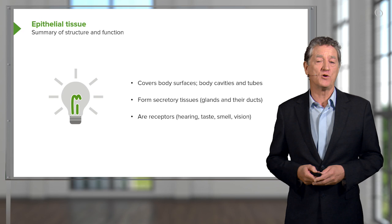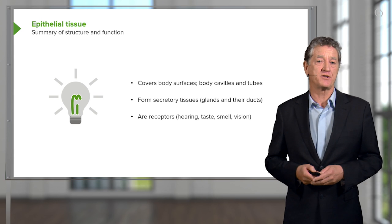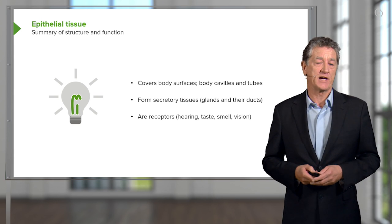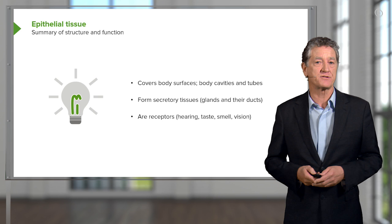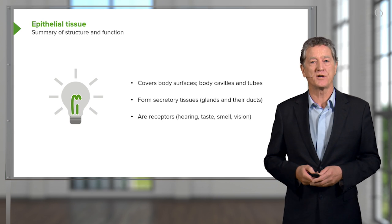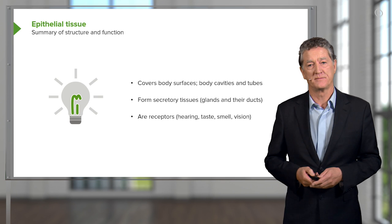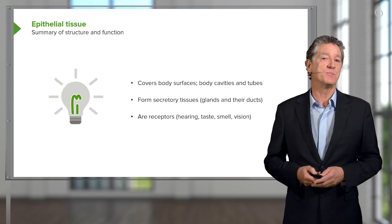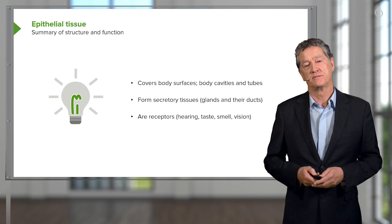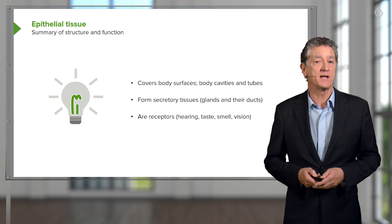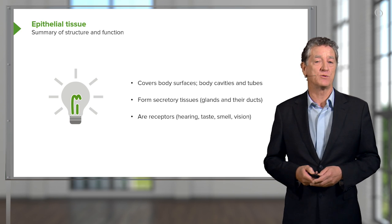Epithelia also form secretory tissues or glands, and also the ducts or conduits that carry the secretory product of these glands to the surface. They are also, in special instances, receptors, and we'll learn about those in more detail when we look at the ear, the tongue, olfactory epithelium in the nasal cavity, and also the eye.